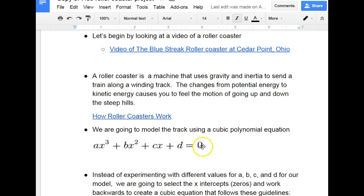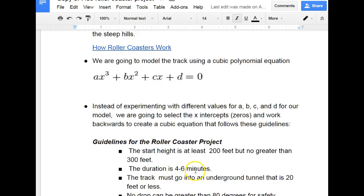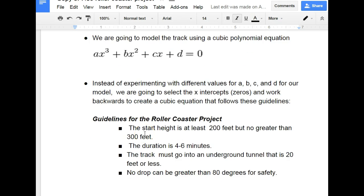Instead of experimenting with different values for a, b, c, and d, we're going to select x-intercepts or zeros and work backwards to create a cubic equation that follows these guidelines. Our roller coaster is going to start at at least 200 feet but no greater than 300. The duration is going to be 4 to 6 minutes.